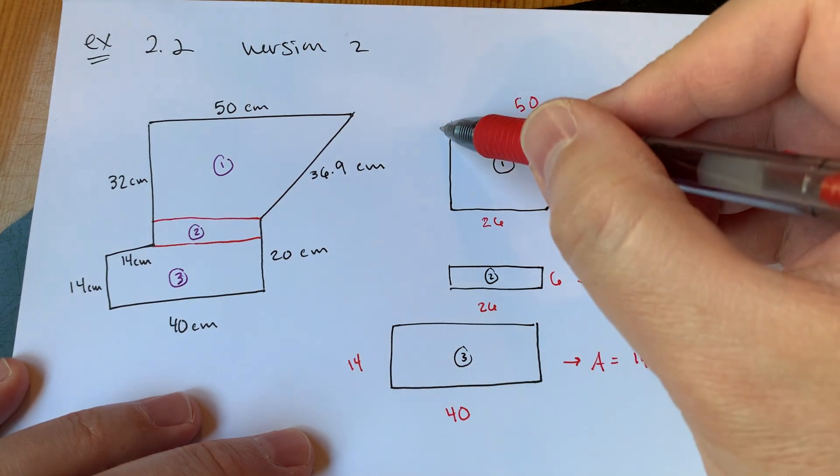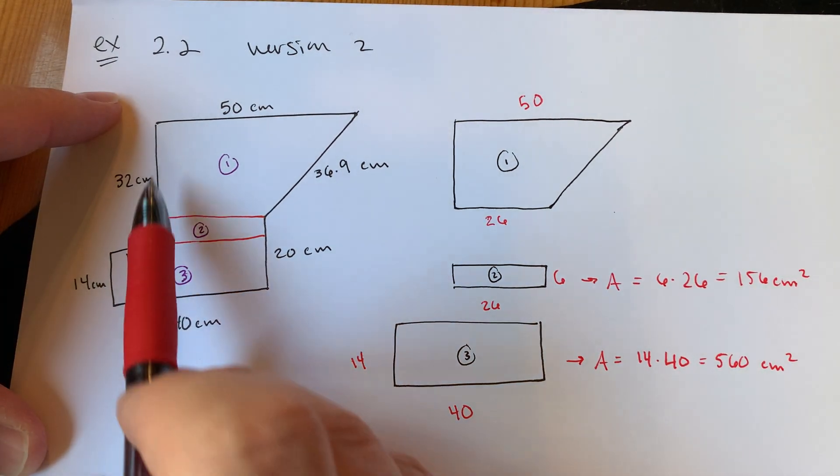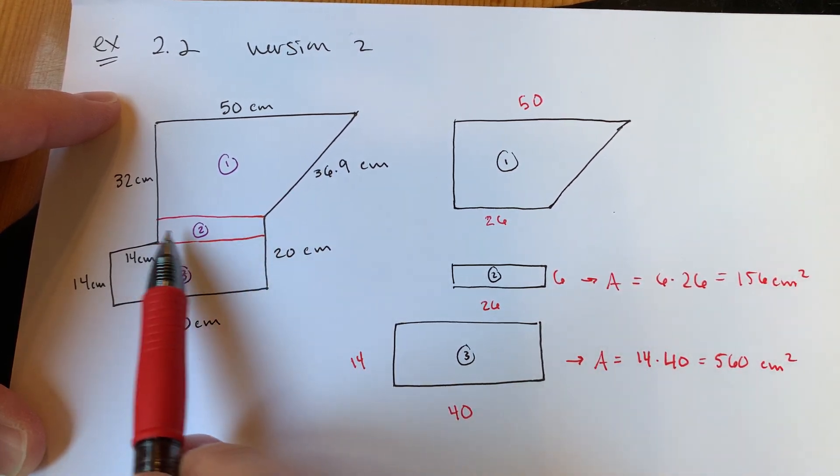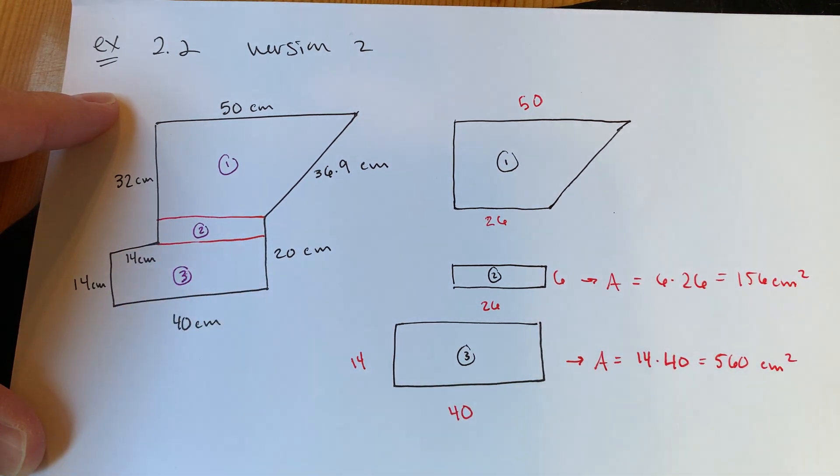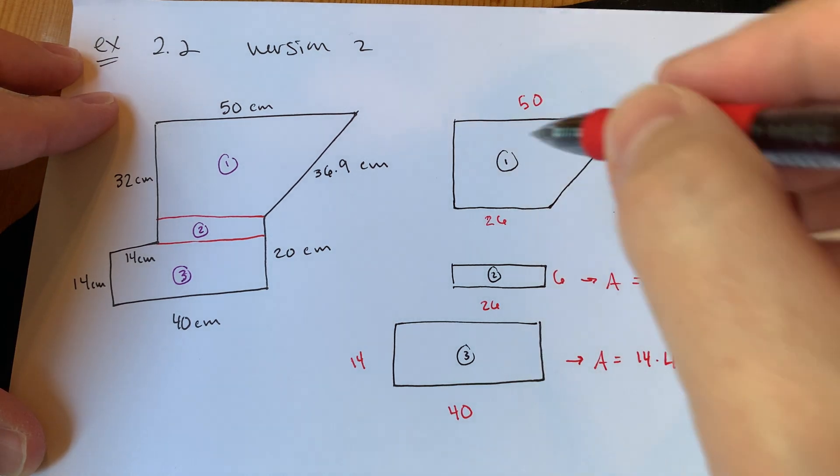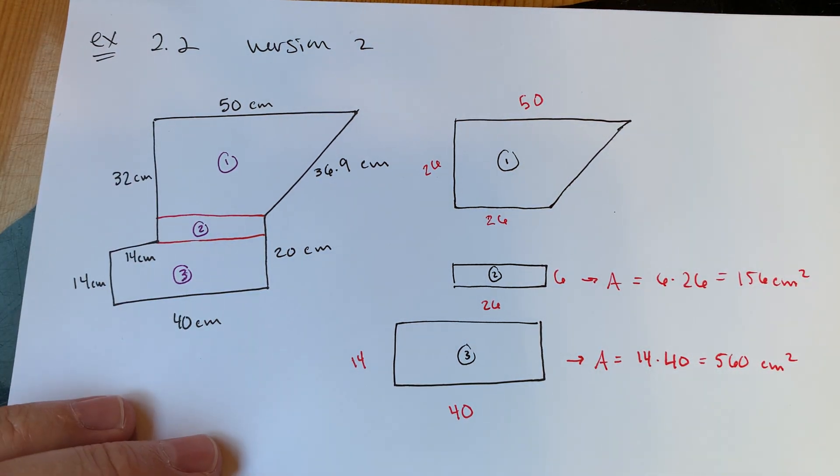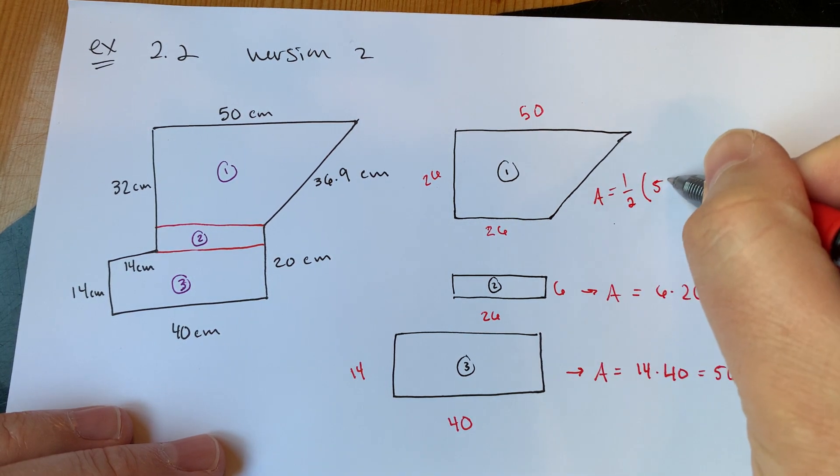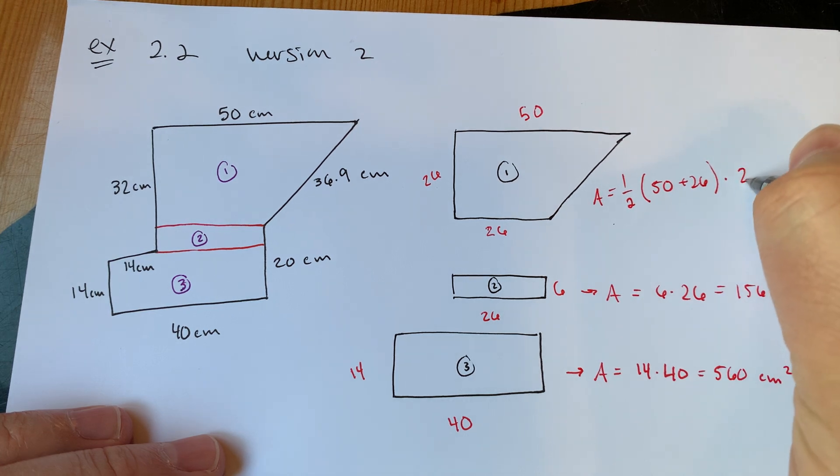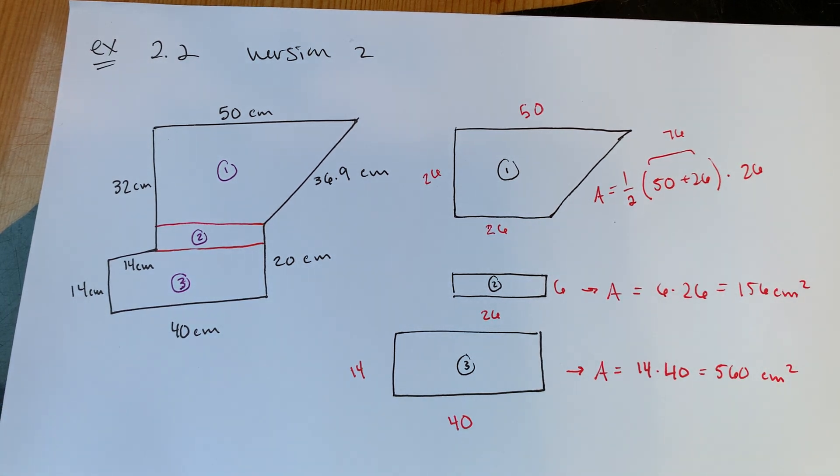For my trapezoid, what I need are my two bases - base one and base two, I've got them. What I need that I'm missing is this height value. I know from this the full height was 32 down to here, but then that short and wide piece, the height on that was 6. So 32 minus 6 would be 26. What's my area formula for a trapezoid? One-half base one plus base two: 50 plus 26, times my height, which is also 26. This is 76, so 76 times 26, divide by 2: 988 square centimeters.